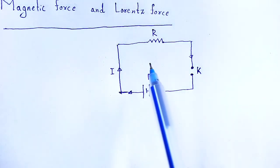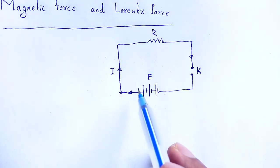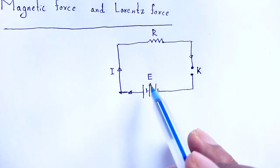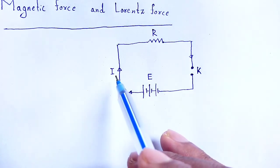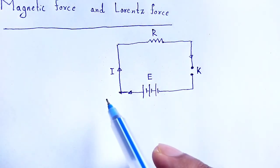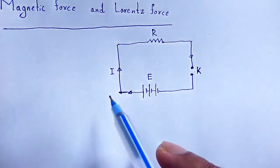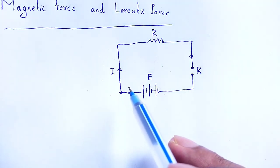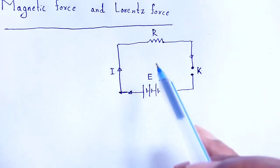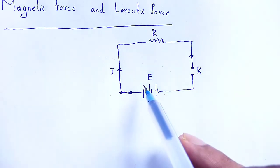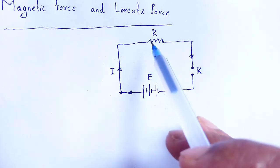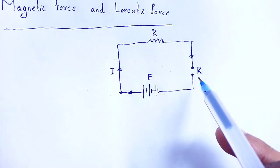When a steady current is passed, since we apply the potential difference as a battery, the nature of the current will be steady — means DC current. There will be no change of current with respect to time. That steady current passes through the circuit, which contains a battery having EMF E, resistance R and key K.